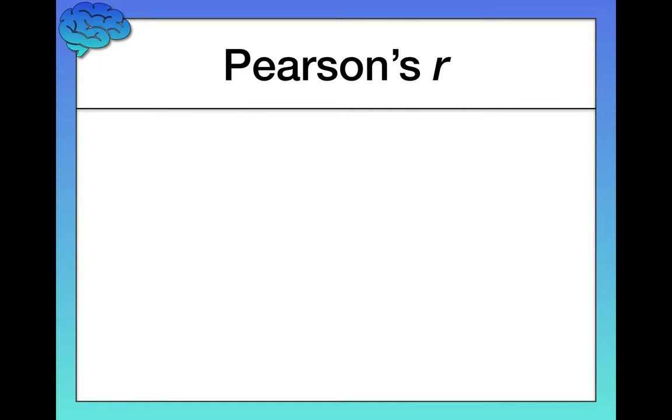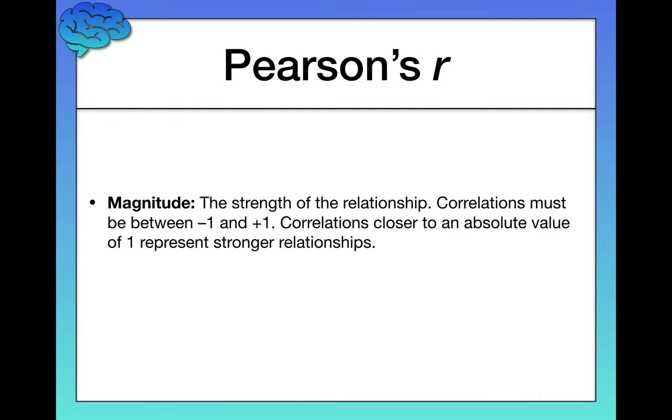So there's two important things to know when interpreting a correlation coefficient, an r value. The first thing to pay attention to is the magnitude, which describes the strength of the relationship. So it's important to know that correlations must always be between negative 1 and positive 1.